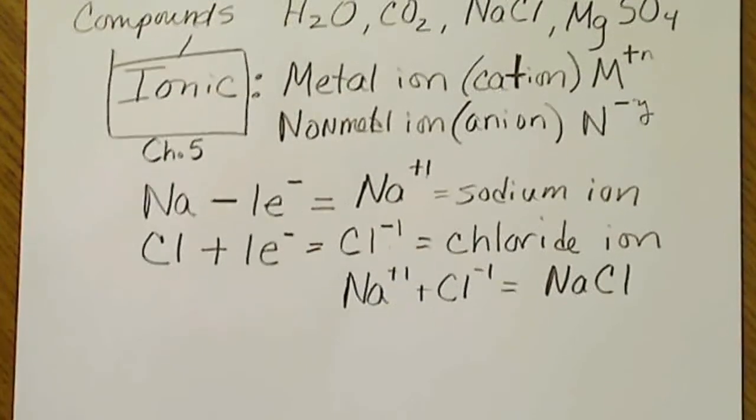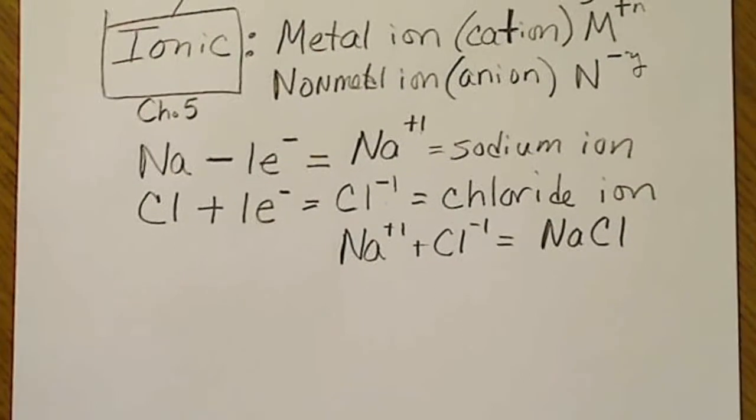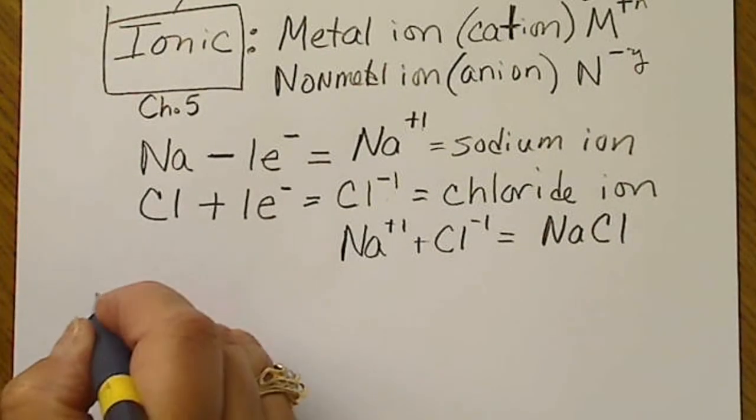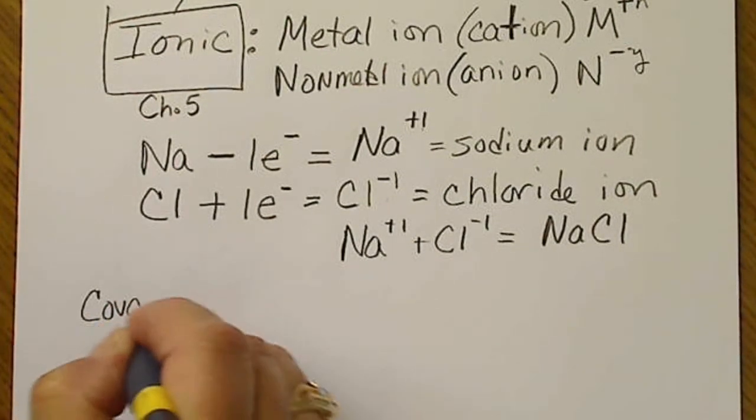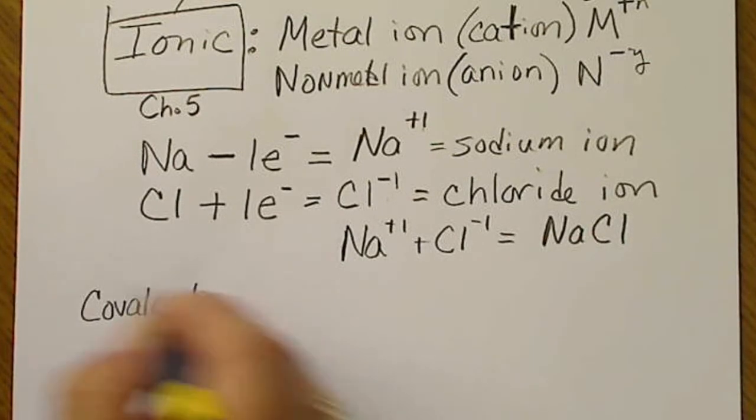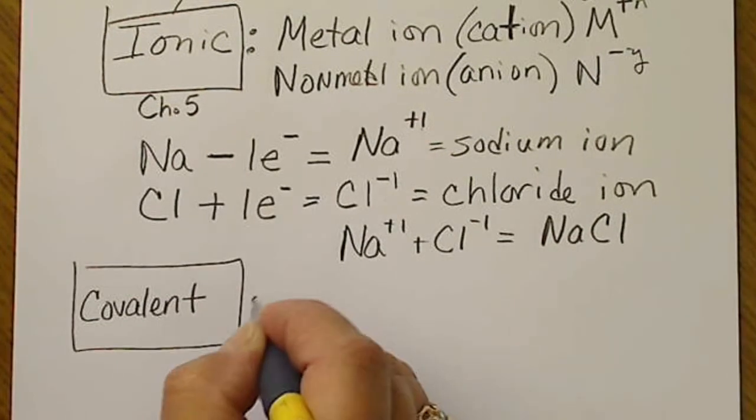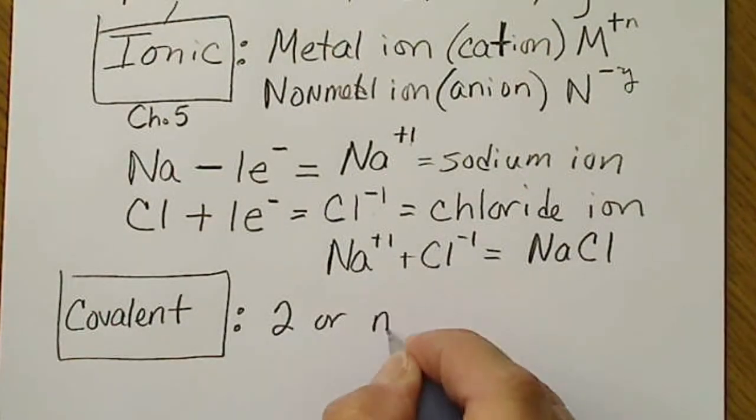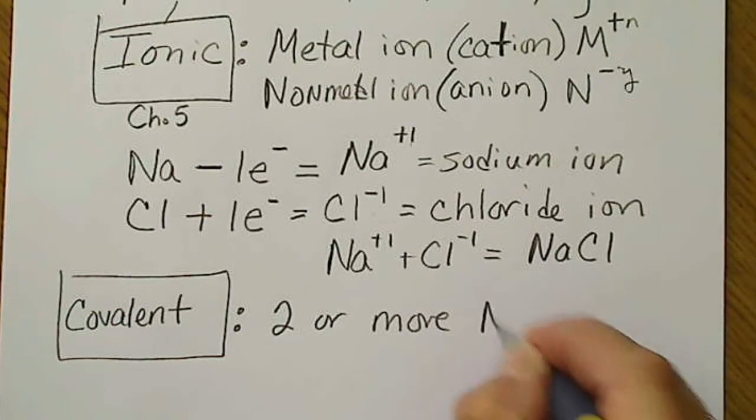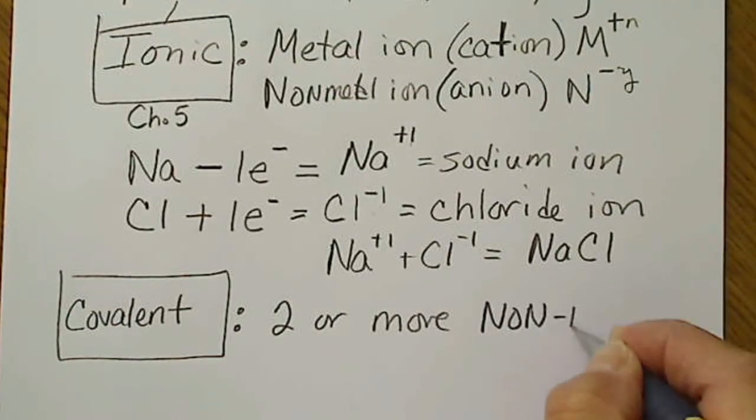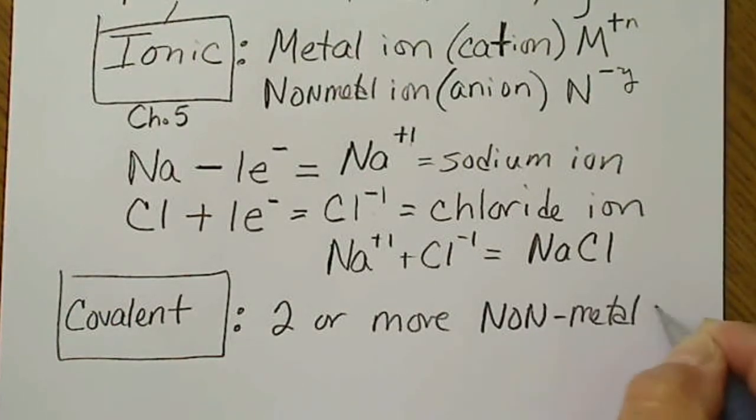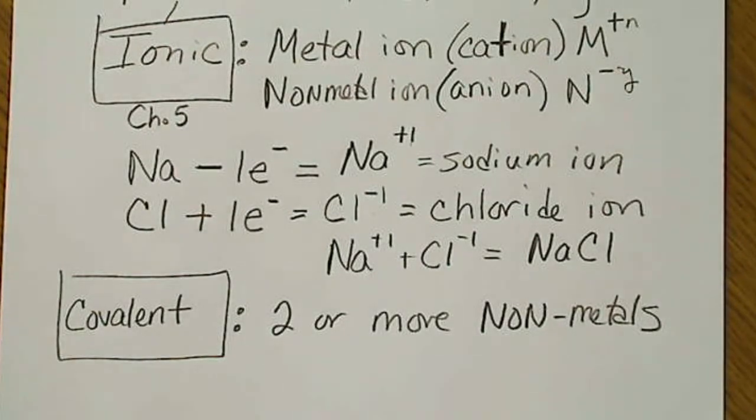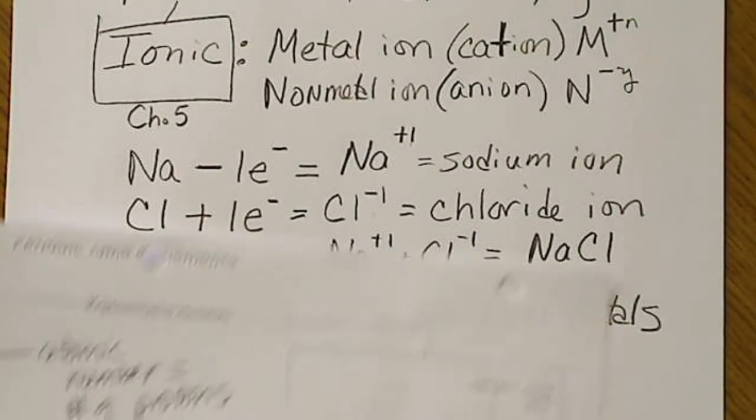The other type of compound that we're going to focus on in chapter ten is a covalent compound. A covalent compound has two or more non-metals, and the non-metals recall are those atoms that are on the right-hand side of the periodic table.